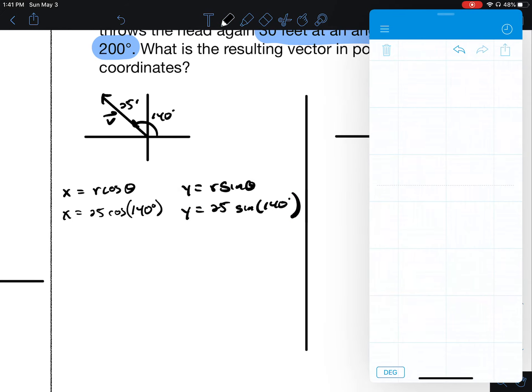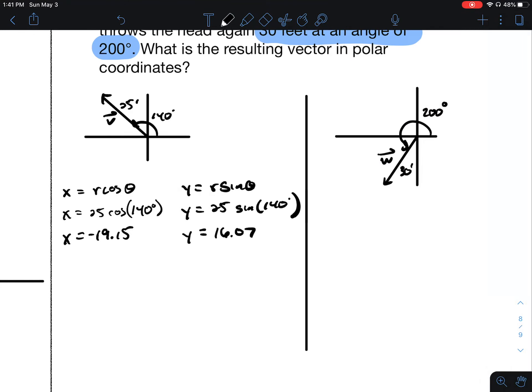Using a calculator, 25 times cosine of 140 is negative 19.15. It makes sense that it's negative, we're going left. 25 sine of 140 is positive, 16.07. So vector V has components of negative 19.15 and 16.07.